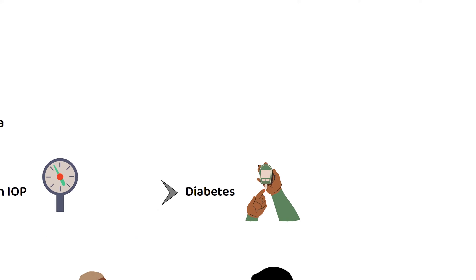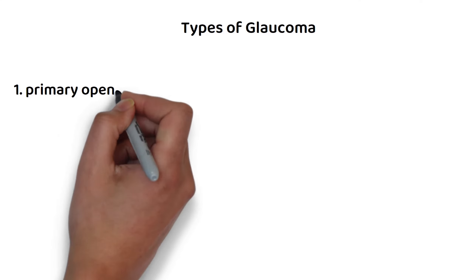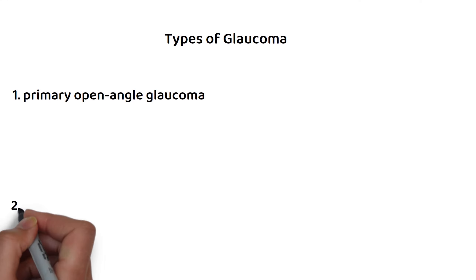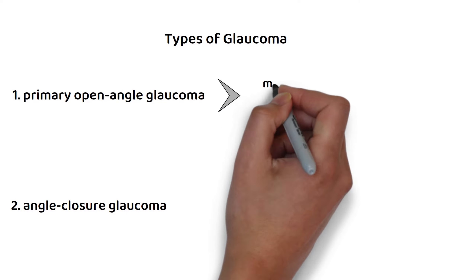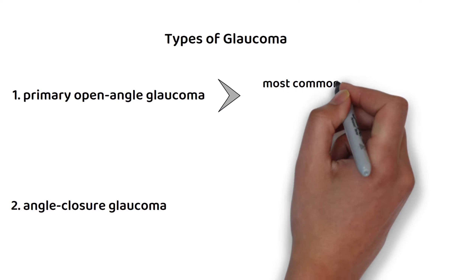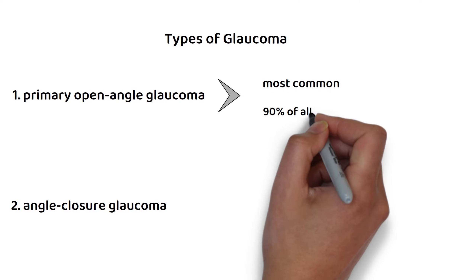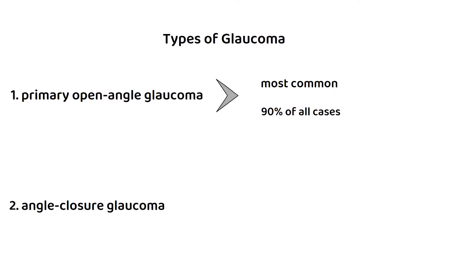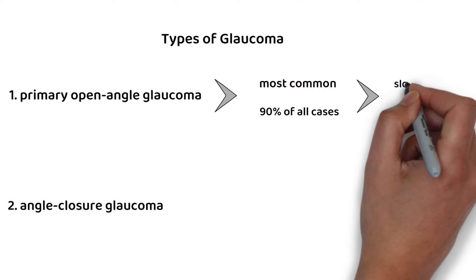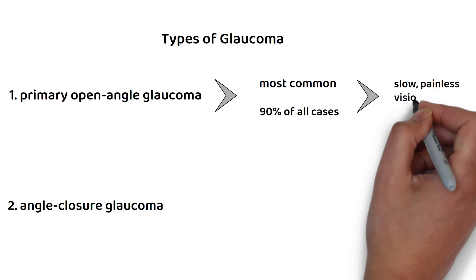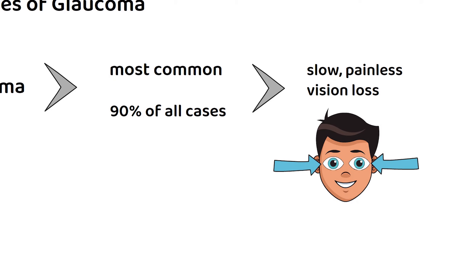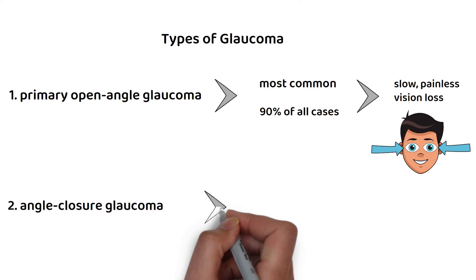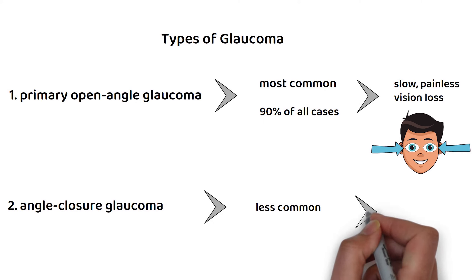There are two main types of glaucoma: primary open-angle glaucoma and angle-closure glaucoma. Primary open-angle glaucoma is the most common form of the disease, accounting for about 90% of all cases. It is characterized by slow, painless vision loss, often beginning with peripheral vision loss. Angle-closure glaucoma is less common, but it can lead to rapid vision loss if not treated promptly.